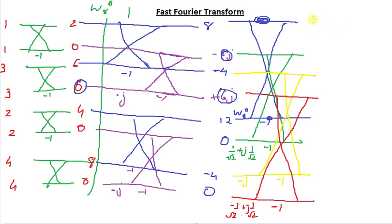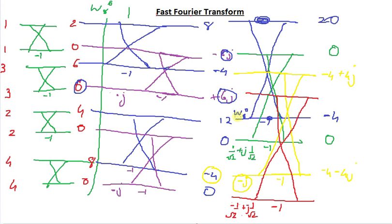Calculating along all the butterfly lines: 8+12=20, 8−12=−4 (×W_8^0=1), and the zero-multiplied terms produce 0. The final result is X[K] = 20, 0, −4+4j, 0, −4, 0, −4−4j, 0. This is exactly the same result I got before using the direct method. That's the fast Fourier transform — it may look complicated but with practice it becomes easy.